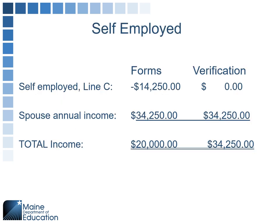Here's an example for self-employed: they send their information and Schedule C shows a negative $14,250. For the verification and application process, a negative Schedule C income becomes zero — it does not reduce total income. Their spousal income on the tax return is $34,250. So for taxes their total income is $20,000, but for the verification process, the negative becomes zero, making their annual income $34,250.